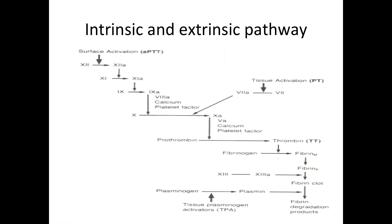Recall that calcium is released by the dense granules of platelets during the secretion process. In clotting factors, at their very end — the gamma position — there is a negatively charged carboxyl group. This gamma-carboxylation cannot be induced single-handedly; it requires a cofactor, and calcium plays this major role. Calcium essentially enhances the activation of clotting factors, mainly in the conversion from factor 9 to 10 and from factor 10 in cleaving prothrombin into thrombin.